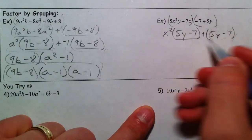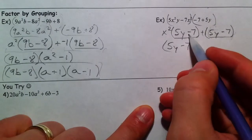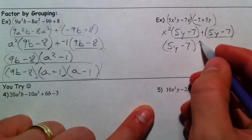Let's pull that 5y minus 7 out, because it's what they have in common. 5y minus 7. What's left after you pull it out of this one is x squared.